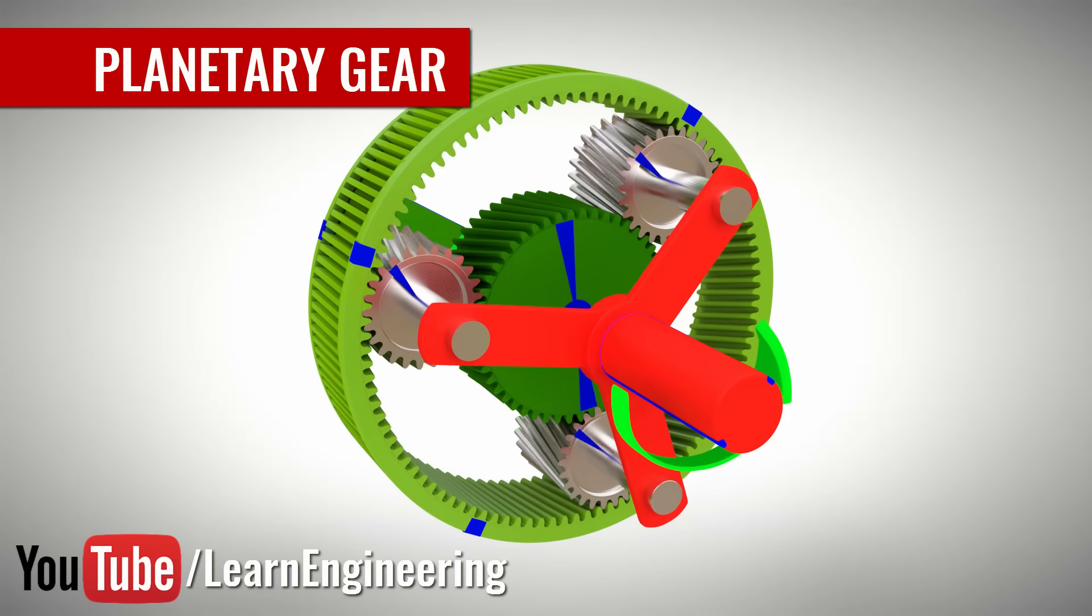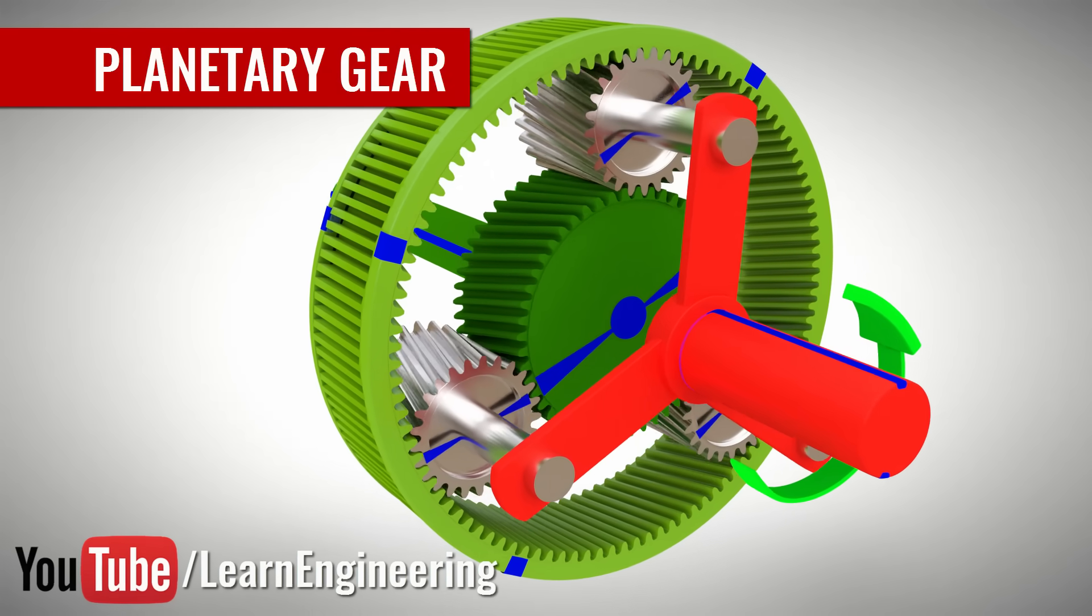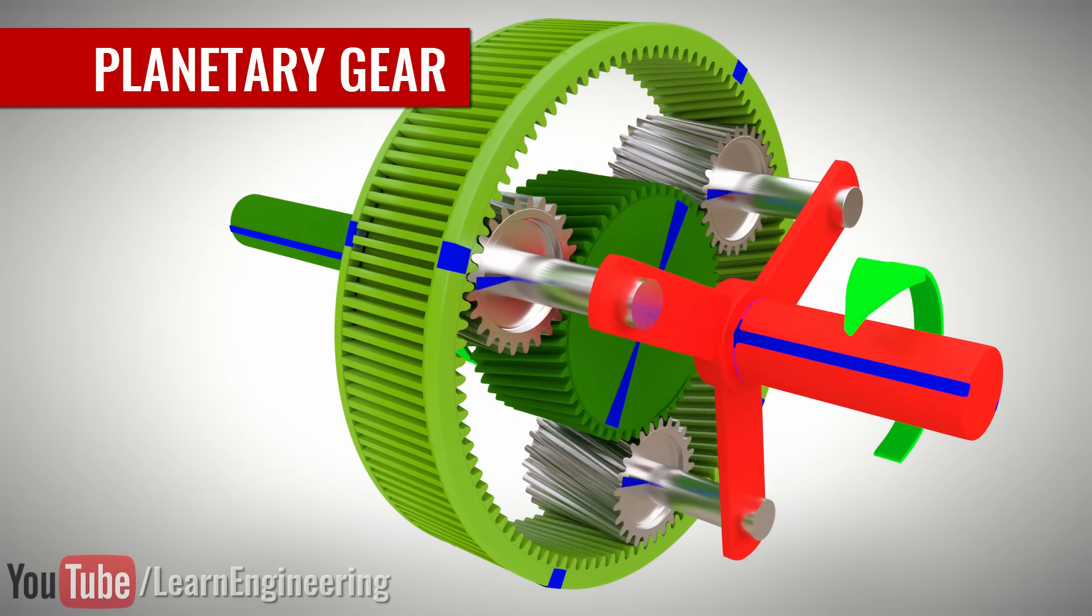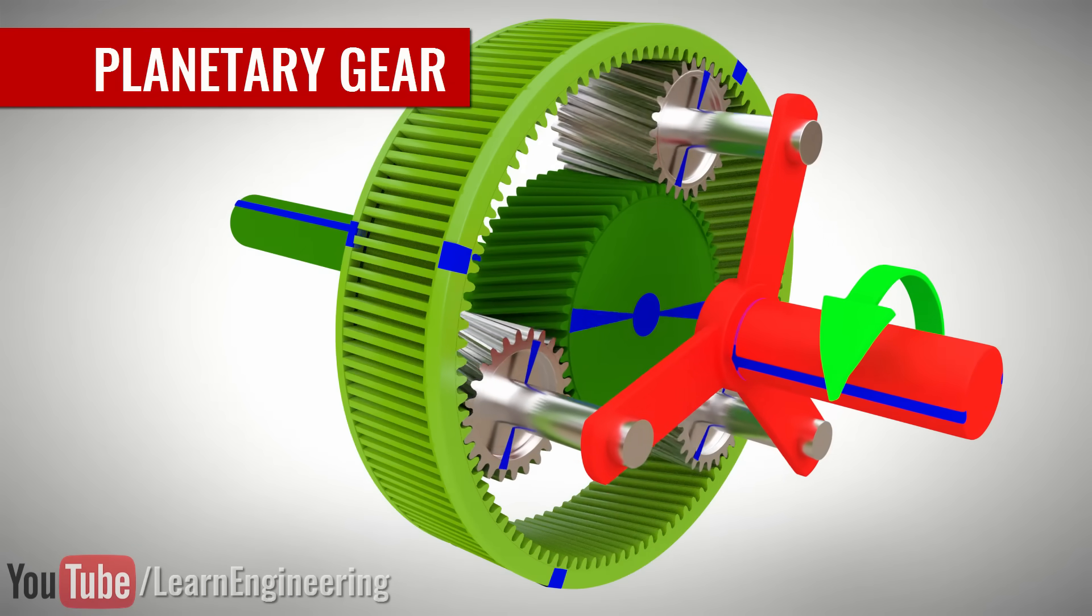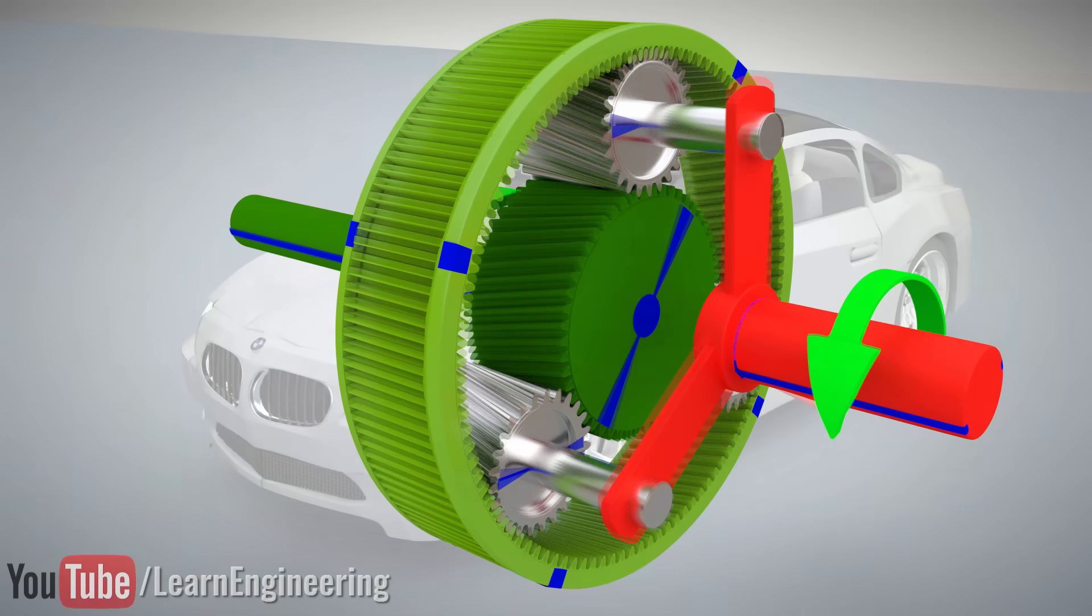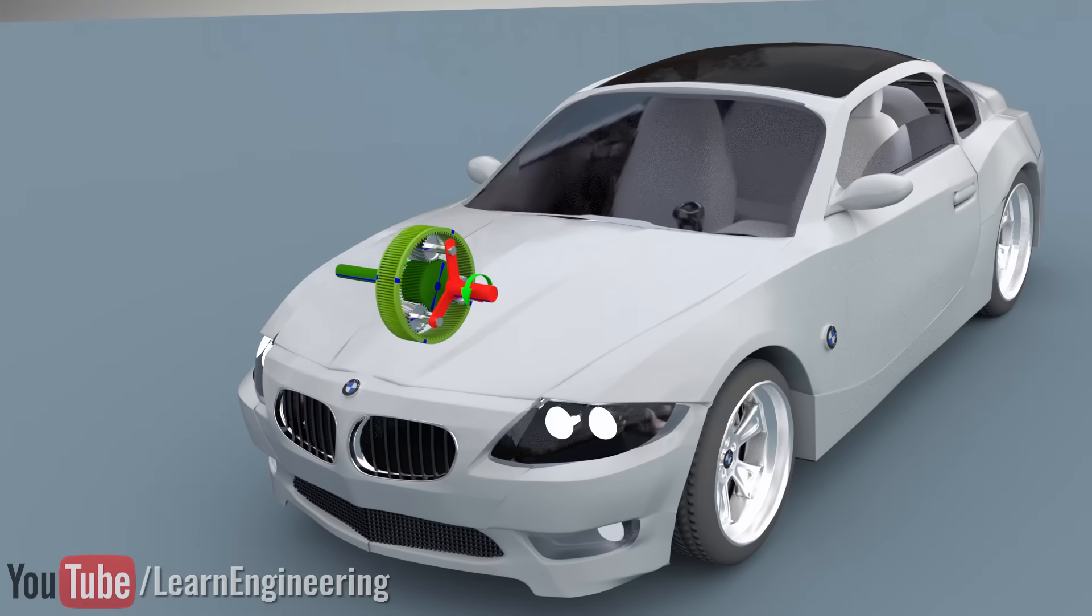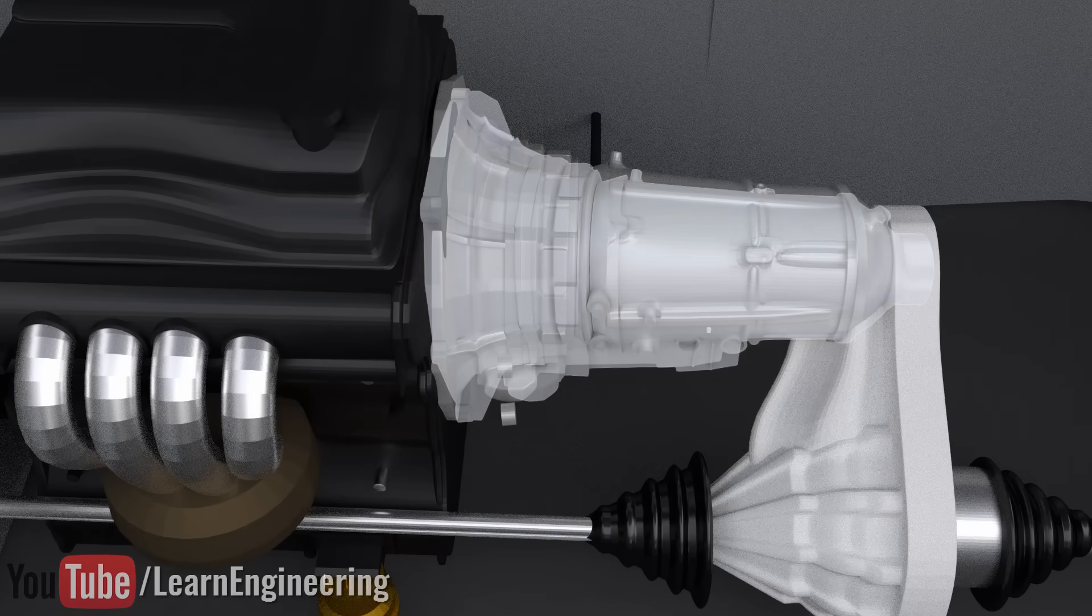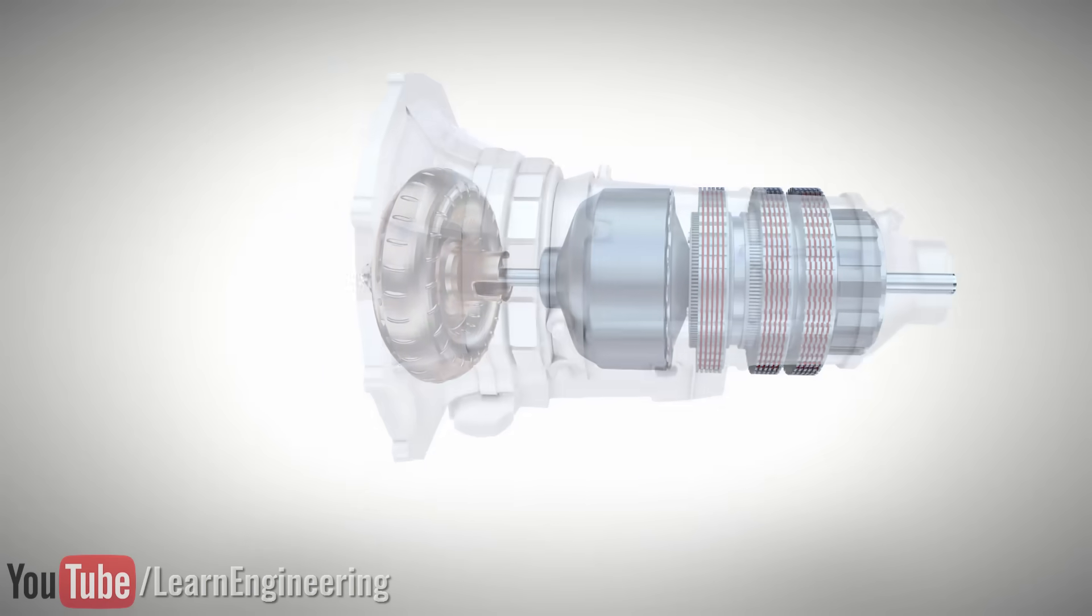The planetary gear set, also known as the epicyclic gear train, is one of the most important and interesting inventions in engineering. They are great speed variation mechanisms and are often used in automobiles as a vital part of automatic transmissions. Let's explore the secrets of the planetary gear set in this video.